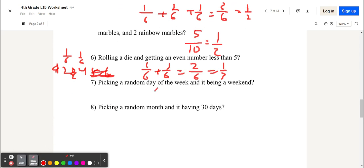And what is the probability of picking a random day of the week and it being a weekend? Well, 2 days of the week are weekends, Saturday and Sunday. And there are 7 days in total. So, it's 2 over 7. And that doesn't simplify. So, that's the probability, 2 sevenths.